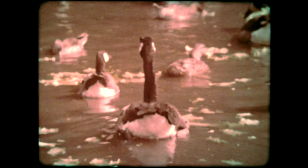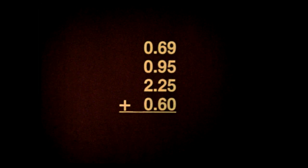Here's your problem: how much does it cost each day to feed all of these different birds? This is what you need for their daily feeding program: a loaf of bread which costs sixty-nine cents, two heads of lettuce which cost about ninety-five cents, one kilogram of fish which costs about two dollars and twenty-five cents, and one kilogram of corn which costs about sixty cents. If we add all these amounts together, we should know about how much it costs to feed the birds each day. First, make sure the decimal points are lined up one above the other, and we're ready to add.